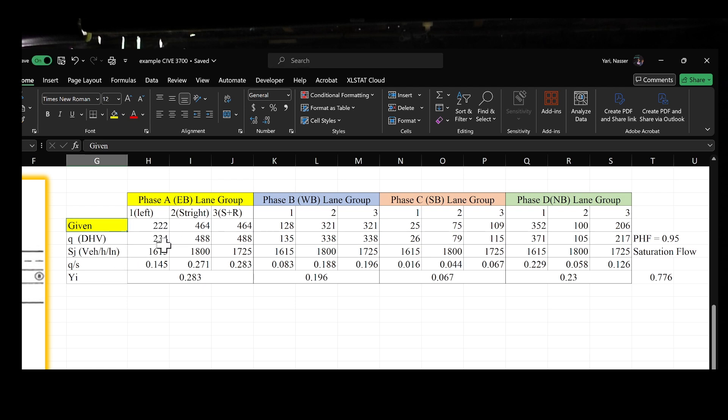So this is our new flow rate. Also what's given to us is the saturation rate right here. We're going to go ahead and divide the flow over the saturation for each one of them in Excel and we come up with this number.